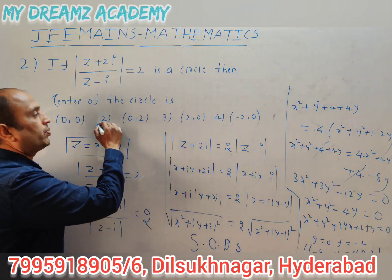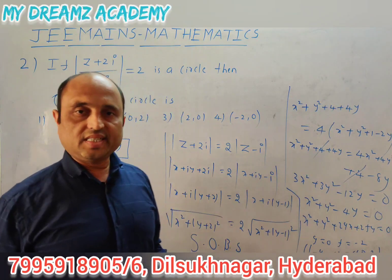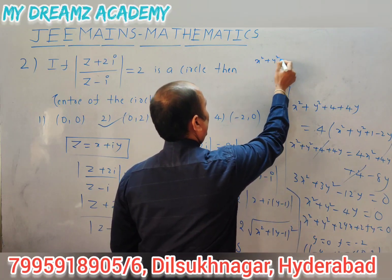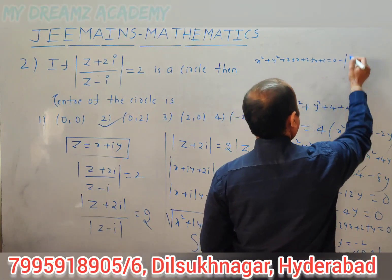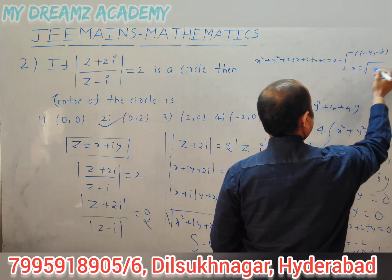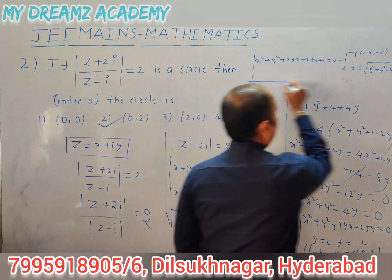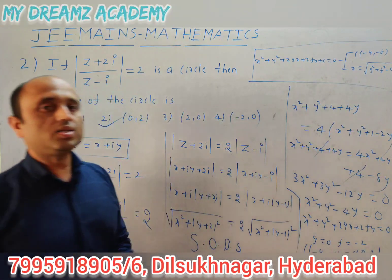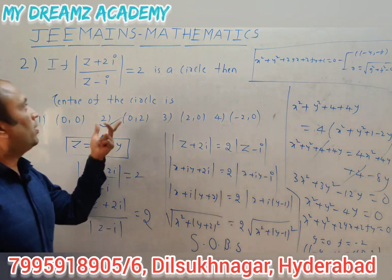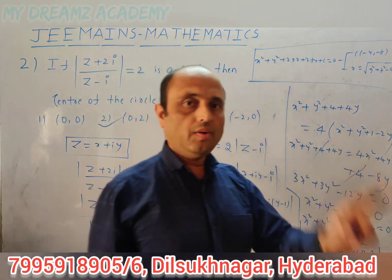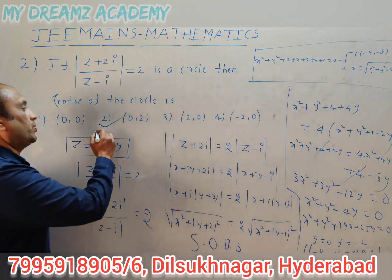Comparing with x² + y² + 2gx + 2fy + c = 0, the center is (-g, -f) = (0, 2). The general form of a circle x² + y² + 2gx + 2fy + c = 0 has center (-g, -f) and radius √(g² + f² - c). Converting |z + 2i|/|z - i| = 2 gives center (0, 2). The second option is true.